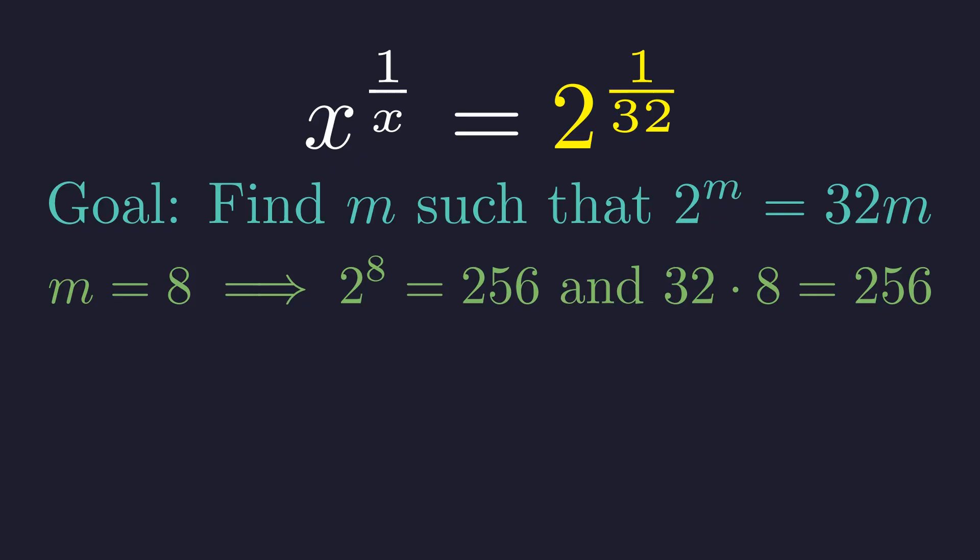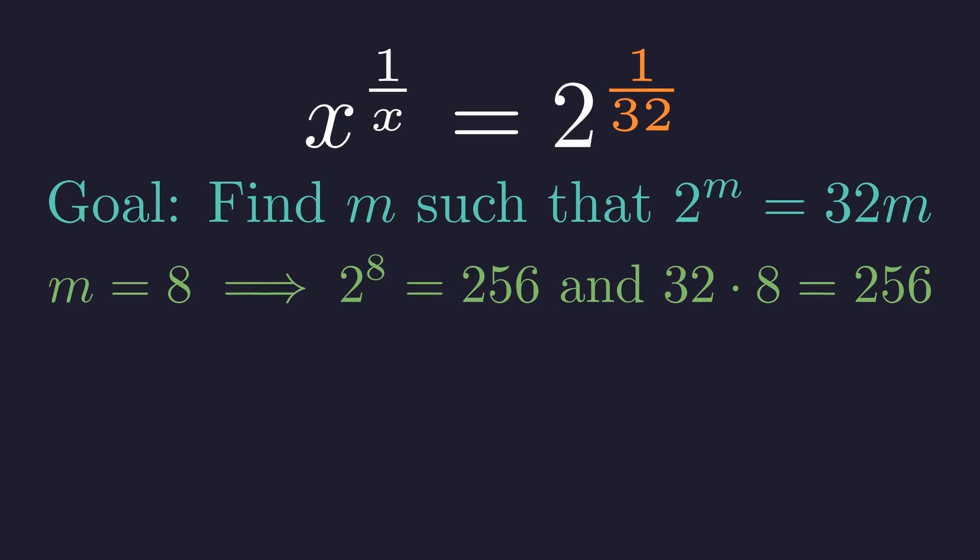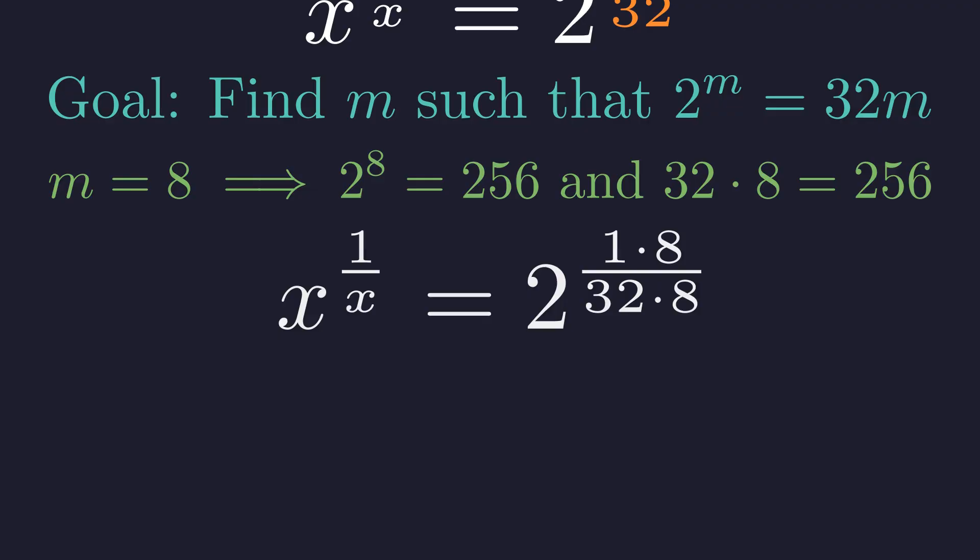2 to the 8th power is 256, which exactly equals 32 times 8. Now we can use this. We'll multiply both numerator and denominator by 8. This doesn't change the value since we're just multiplying by 1 in the form of 8 over 8. The denominator becomes 32 times 8, which is 256.